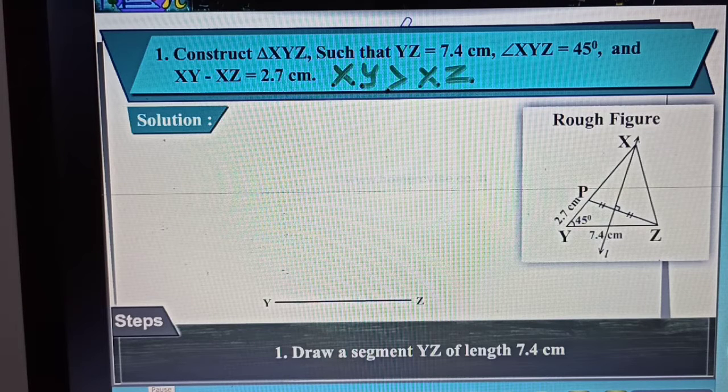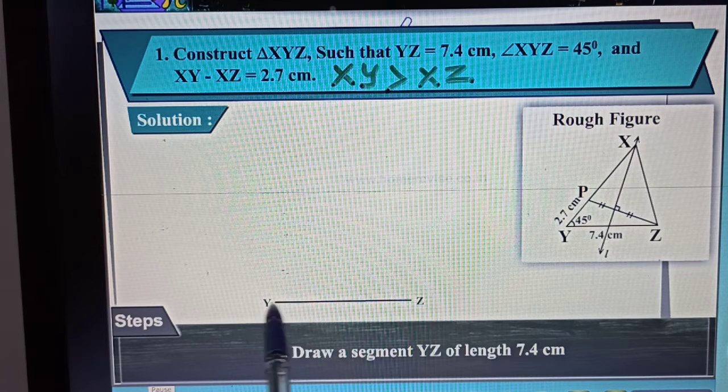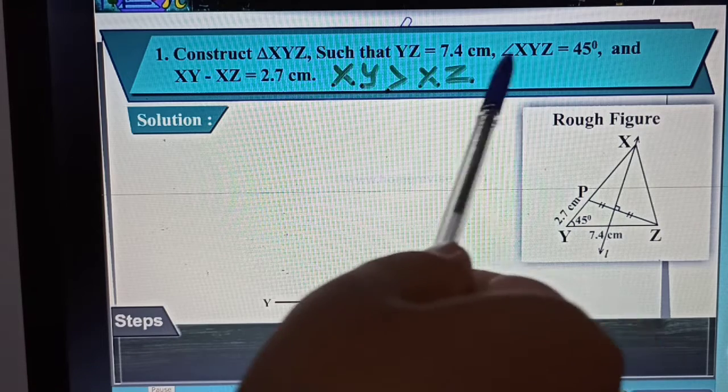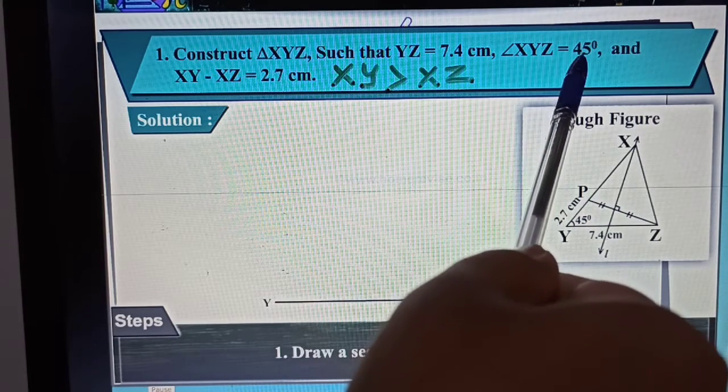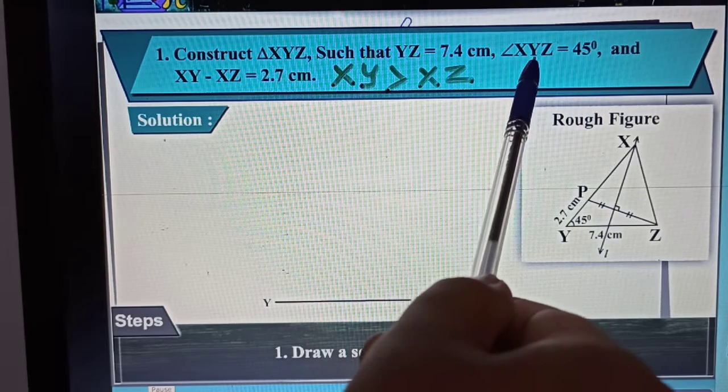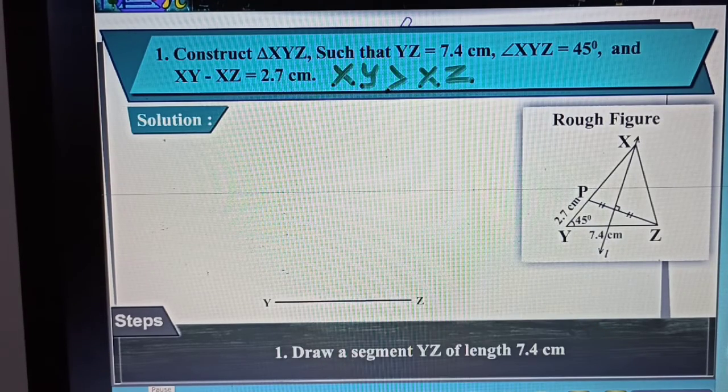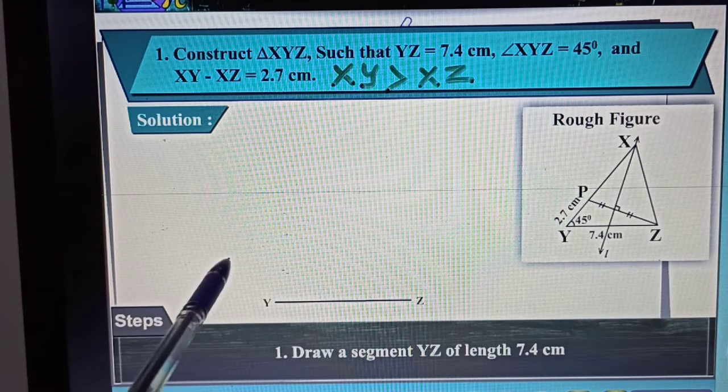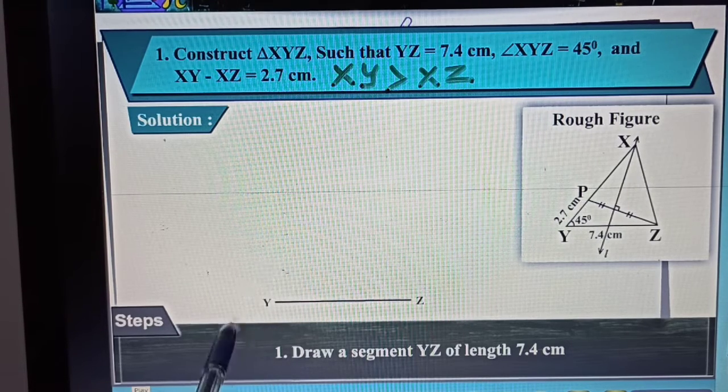What we have done here is we have drawn the base YZ. Then the angle XYZ is 45 degrees. The central point is important because the angle will be at that central point, so you will draw the angle keeping the protractor on point Y.